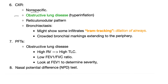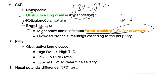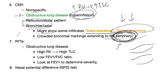You can order a chest X-ray, which is nonspecific. You'll find obstructive lung disease features such as hyperinflation — barrel-shaped chest and increased residual volume leading to increased total lung capacity. You can find a reticulonodular pattern, or bronchiectasis showing tram tracking — dilation of airways. Bronchiectasis means ectasia equals dilation. Crowded bronchial markings extend to the periphery. On PFTs, you find an obstructive pattern: high residual volume, increased total lung capacity, and low FEV1/FVC ratio. Look at FEV1 to determine severity.